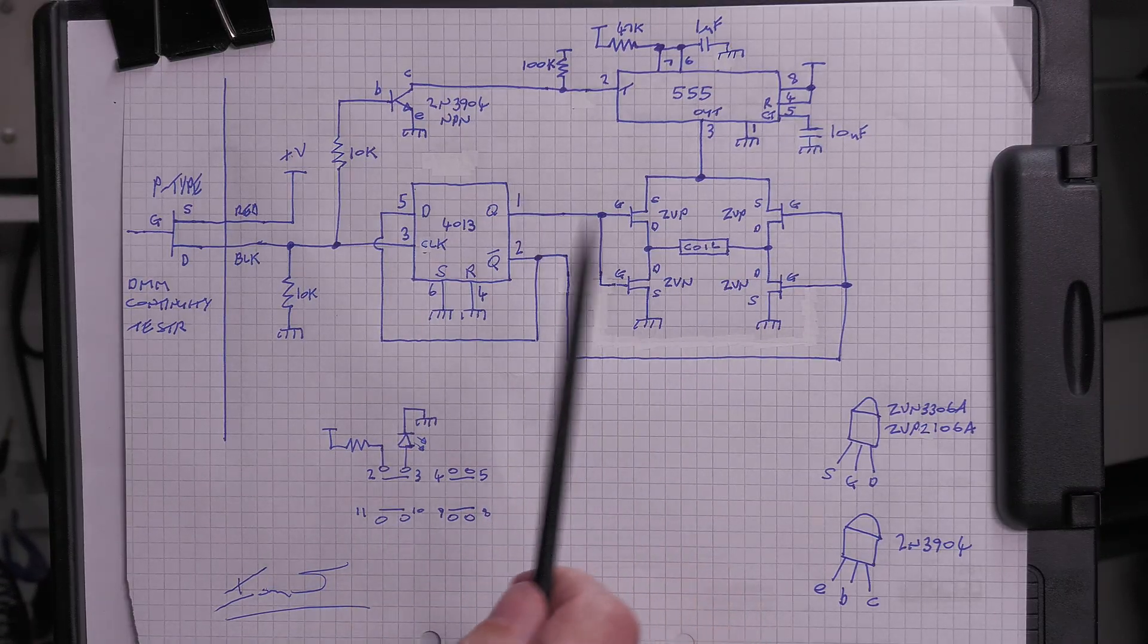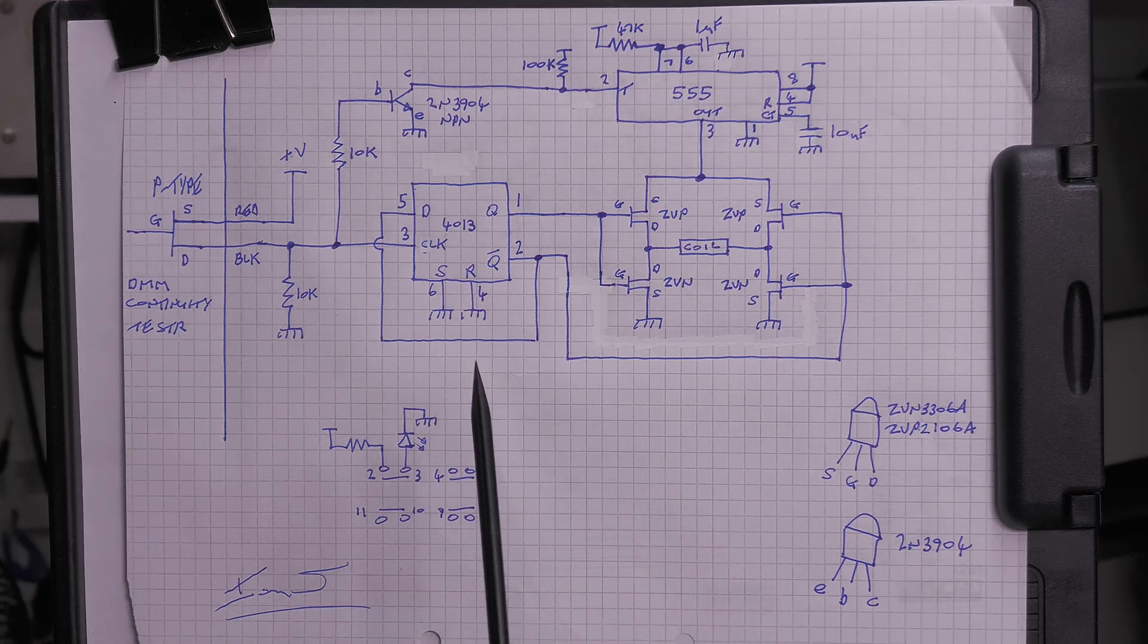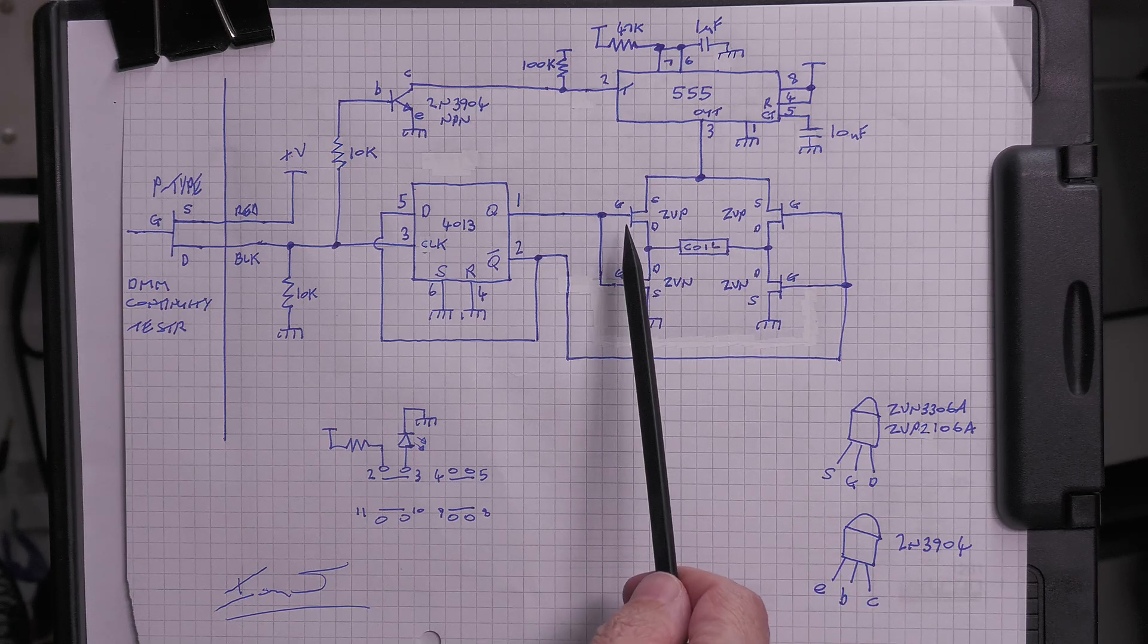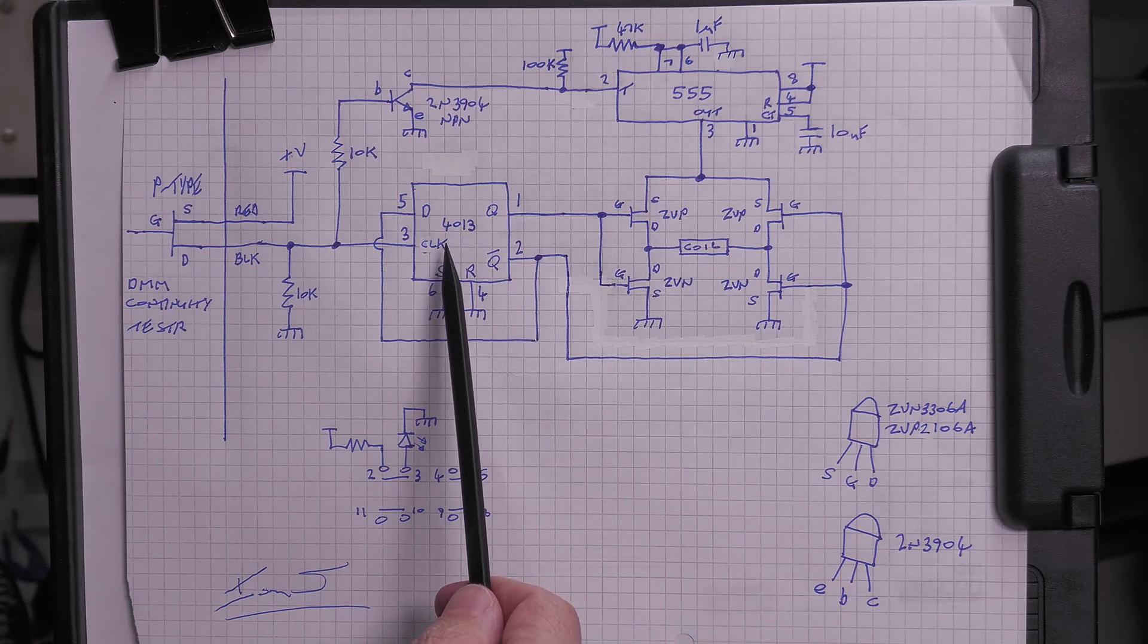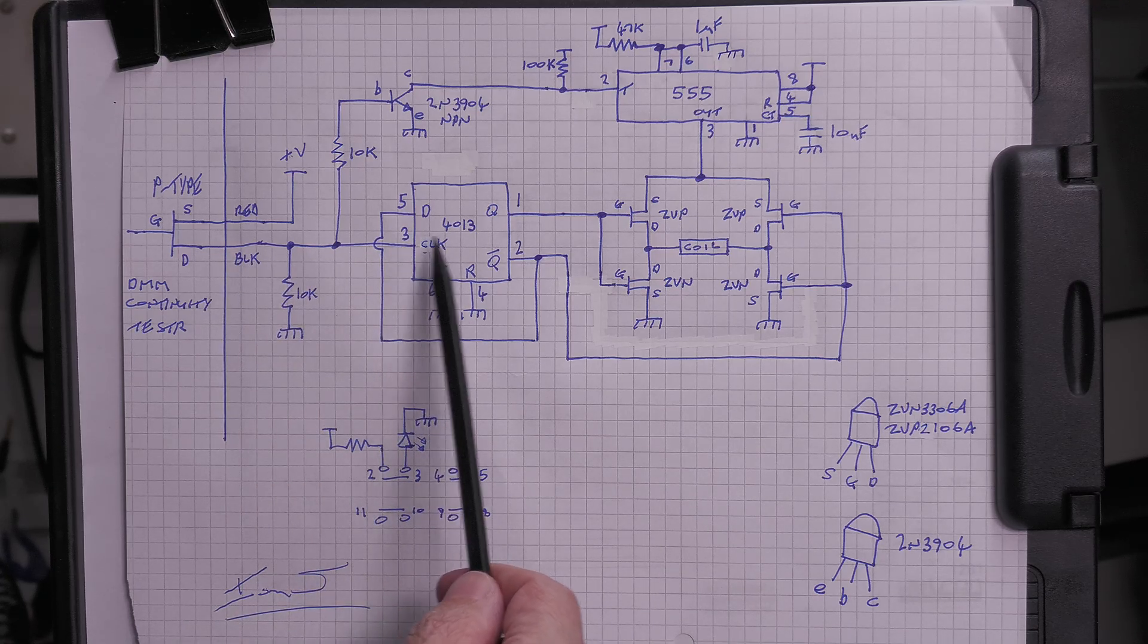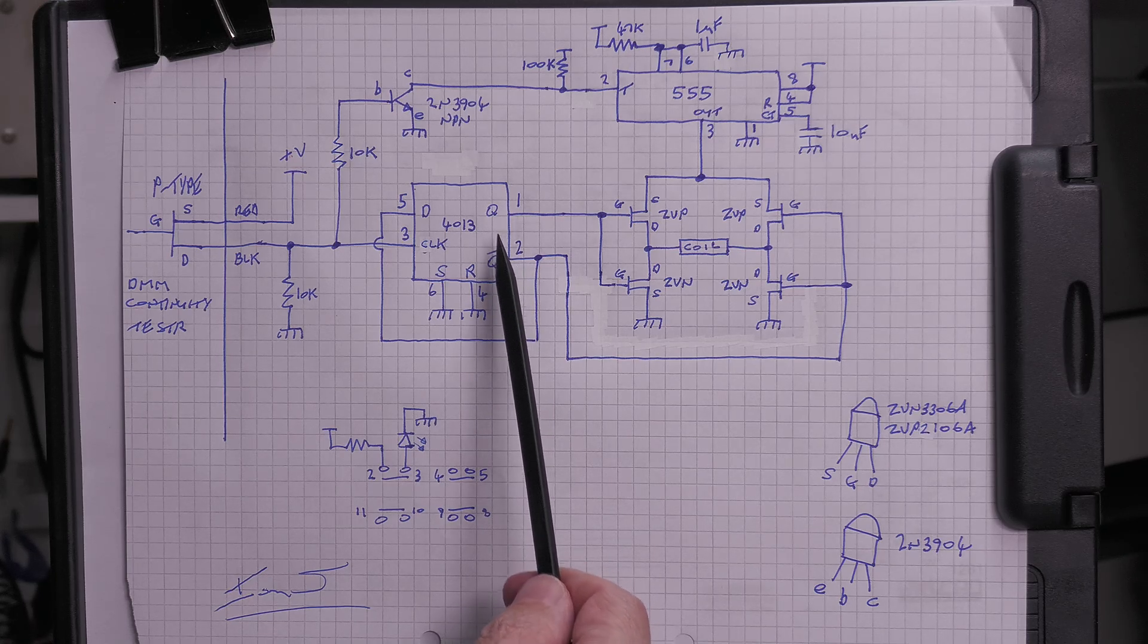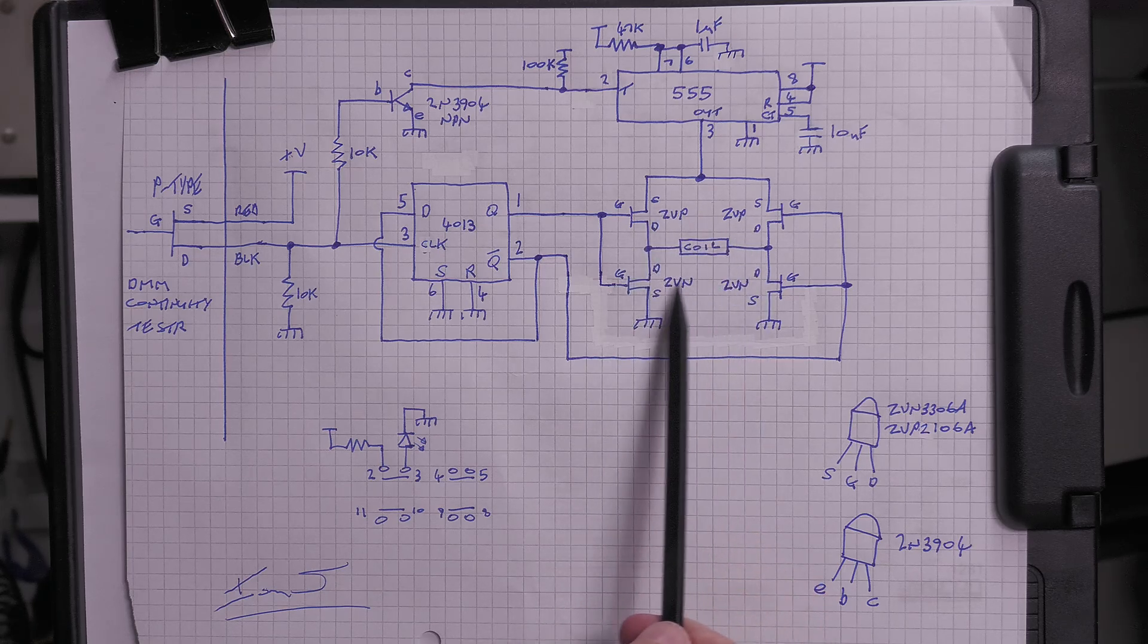The idea is I want to reverse the polarity of the coil on the relay and have it go back and forth so I can see the relay setting and unsetting. Here's the coil for the relay, and I've got a little H-bridge circuit here consisting of two P-type FETs and two N-type FETs, driven from a 4013 flip-flop. A simple square wave comes in here into the clock, set up as a divide-by-two. When Q goes high, Q-bar goes low, and they'll continually flip back and forward as the square wave comes in. That will turn on and turn off the FETs on the H-bridge.